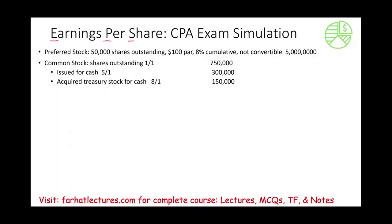We have preferred stocks: 50,000 shares, $100 par value, 8% cumulative, not convertible, worth $5 million. A few things we have to be aware of right from the beginning: the preferred stock is cumulative. What does that mean? It means we have to deduct the preferred dividend from net income before we compute earnings per share.